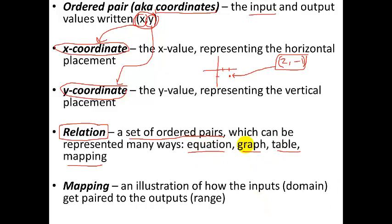So an equation, you've already seen. A graph, I think you've already seen. And a table, I'm pretty sure you've already seen. A lot of times it looks like this and will fill in values. But a mapping is one that you may not have seen before. So what is a mapping? A mapping is an illustration of how the inputs, which are called the domain, we'll talk about domain more, get paired to the outputs, which is called range. So it's like a picture, basically.